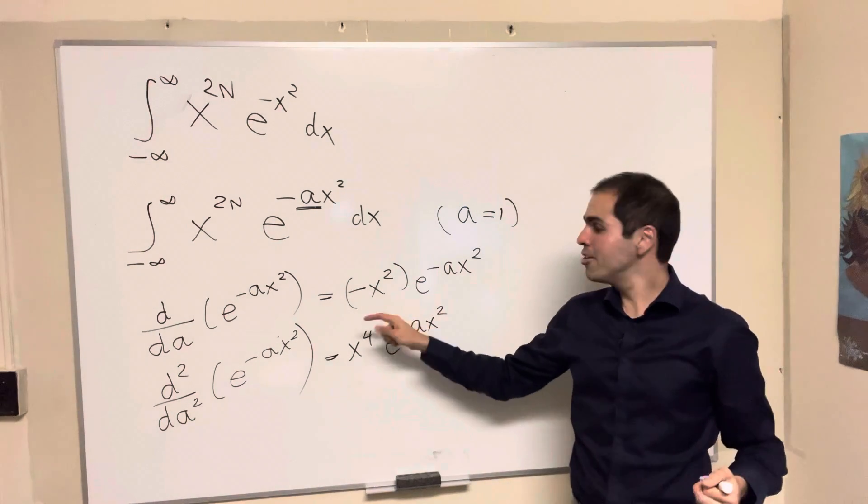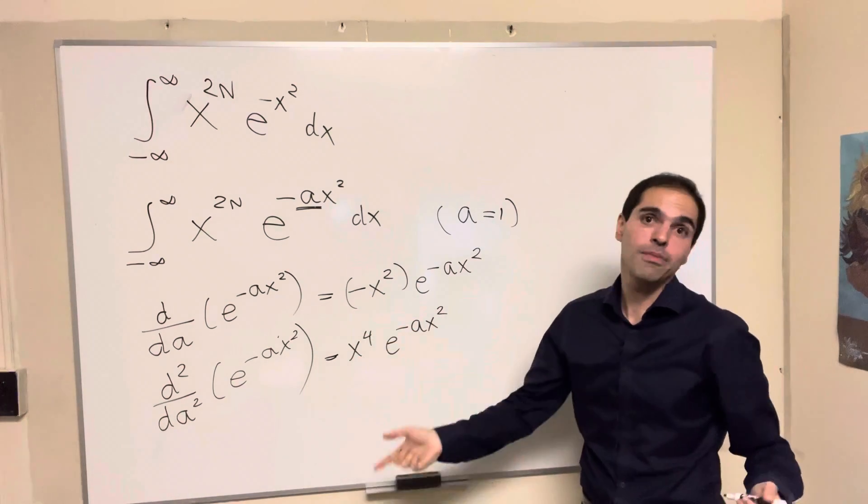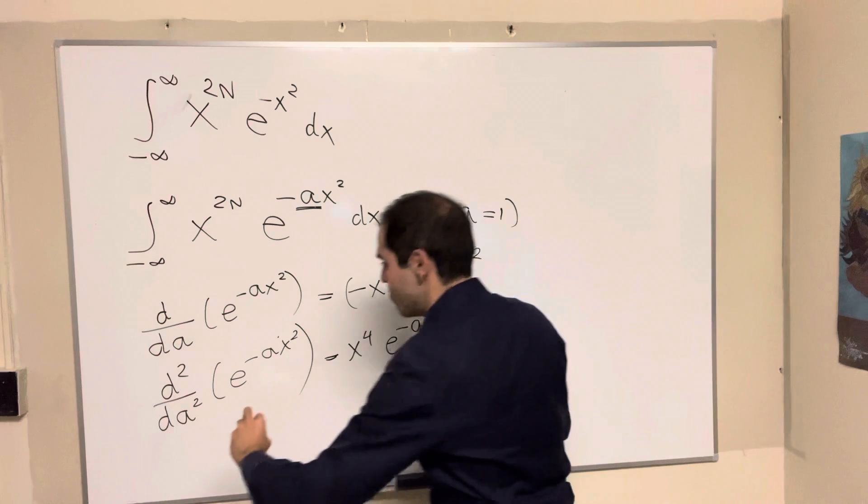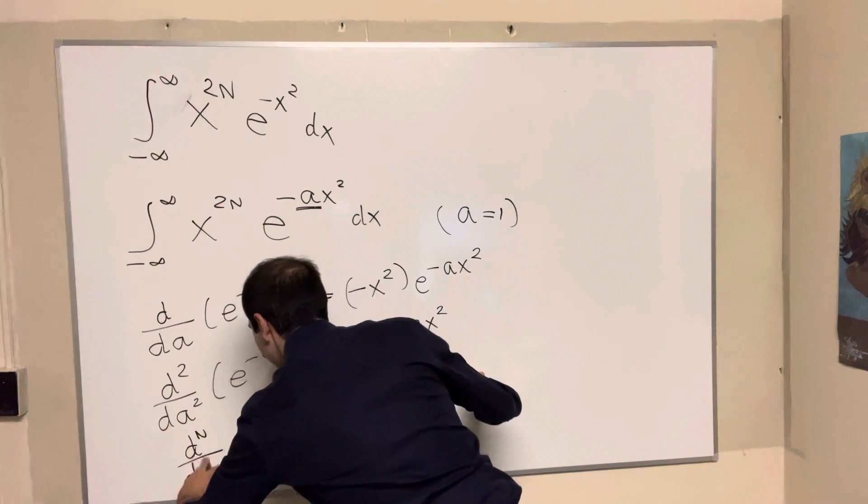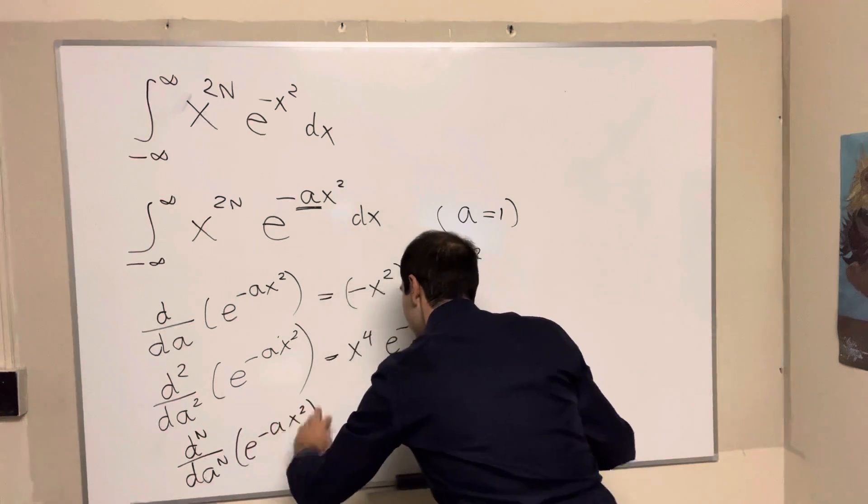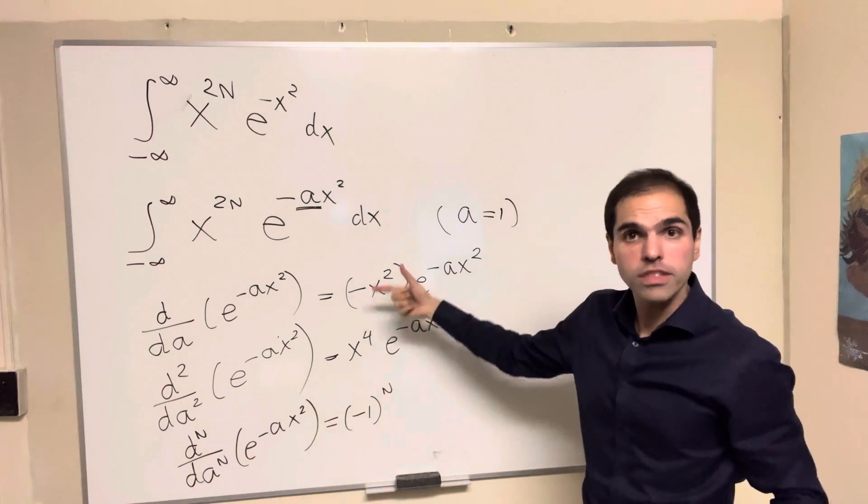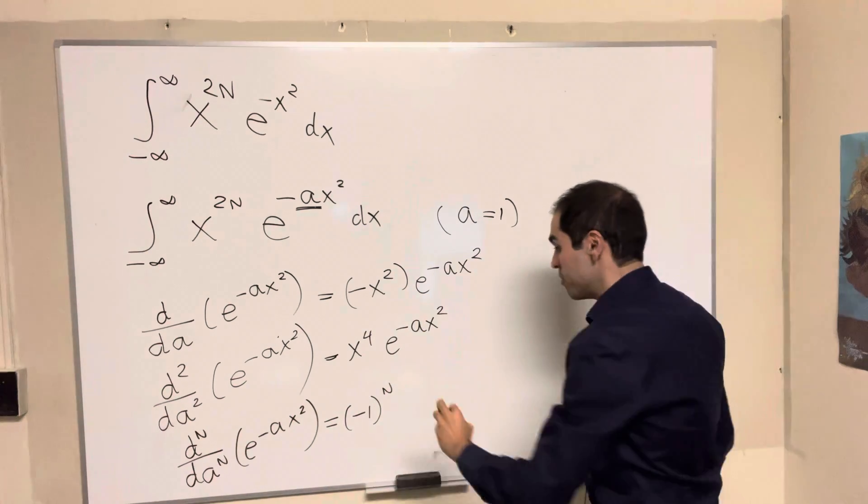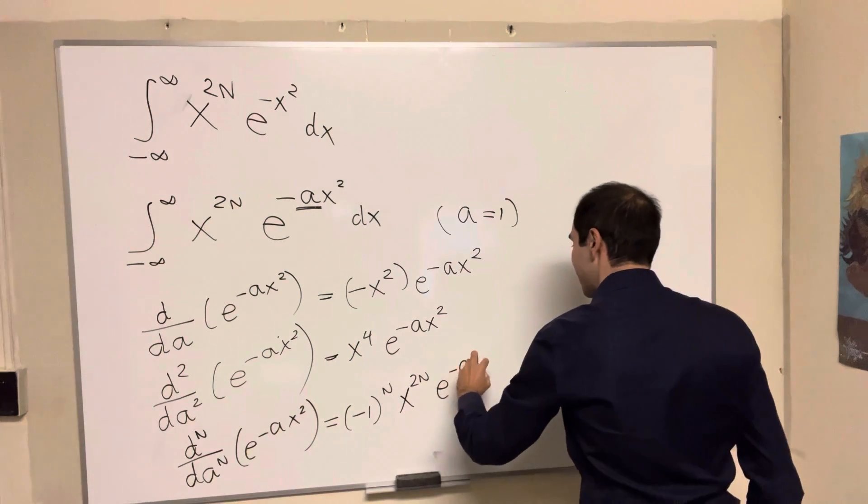And now maybe you see the pattern. So we have a minus, plus, and then minus, plus, et cetera. So in general, we have a minus 1 to the n. If you calculate the nth derivative, e of minus a x squared, this gives us minus 1 to the n. And then we have all those even powers that come out, x to the 2n and e of minus a x squared.